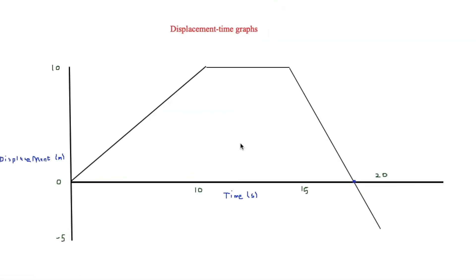The next thing to look at is displacement-time graphs. On the y-axis we have displacement and on the x-axis we have time. Displacement is a vector which shows the change of position. So if we start tracing this person's journey, at the start they are moving forward, and in 10 seconds they move 10 metres, as shown on the graph.